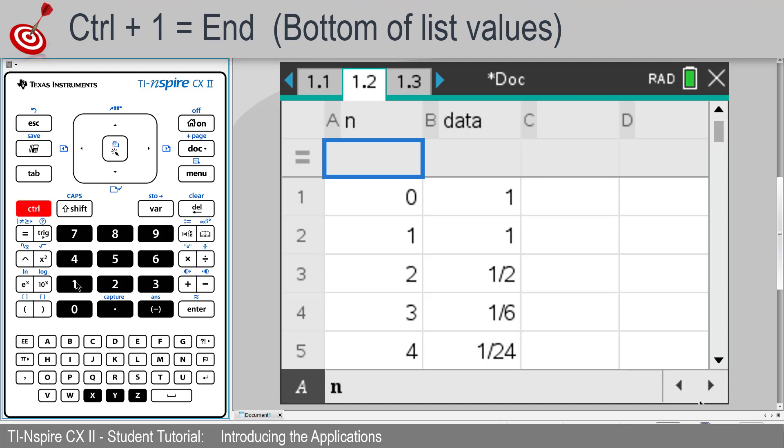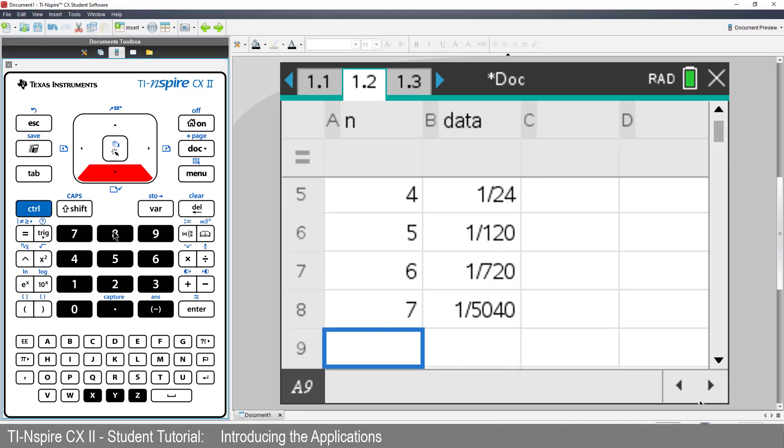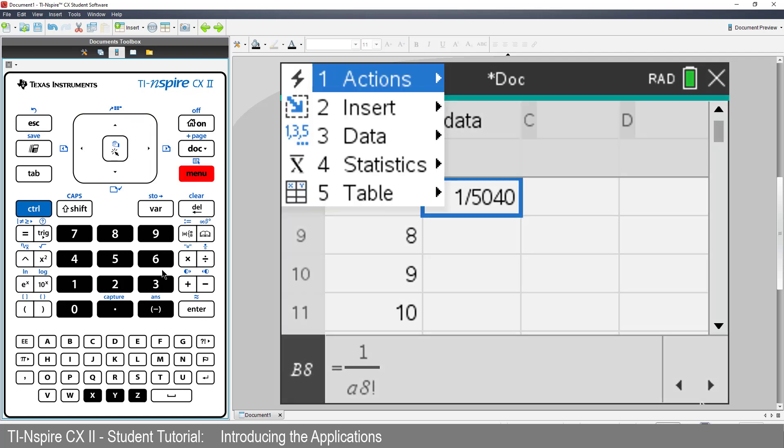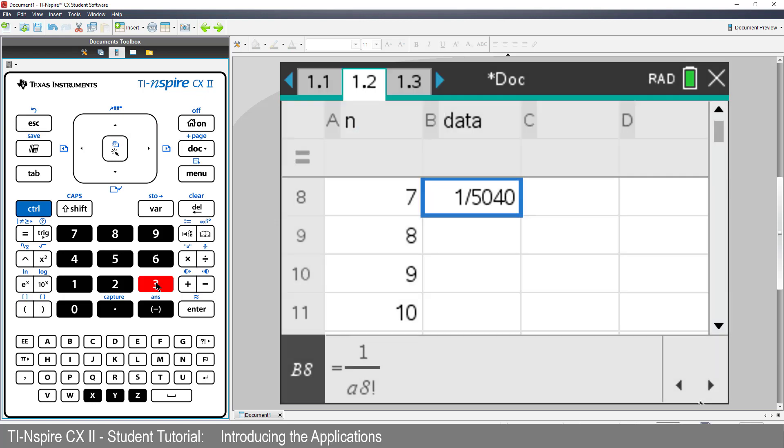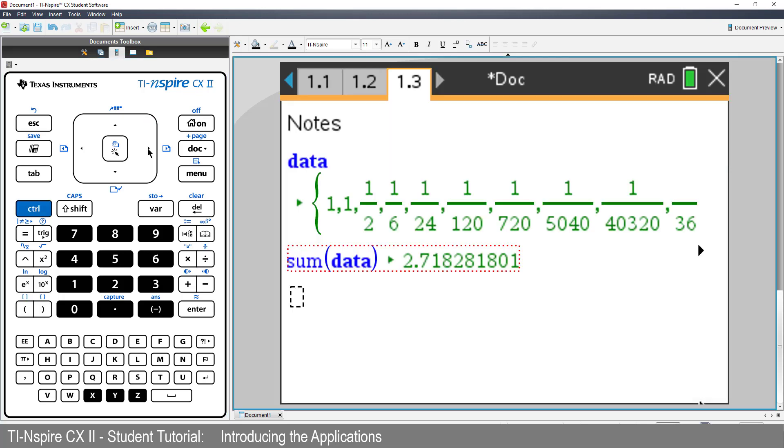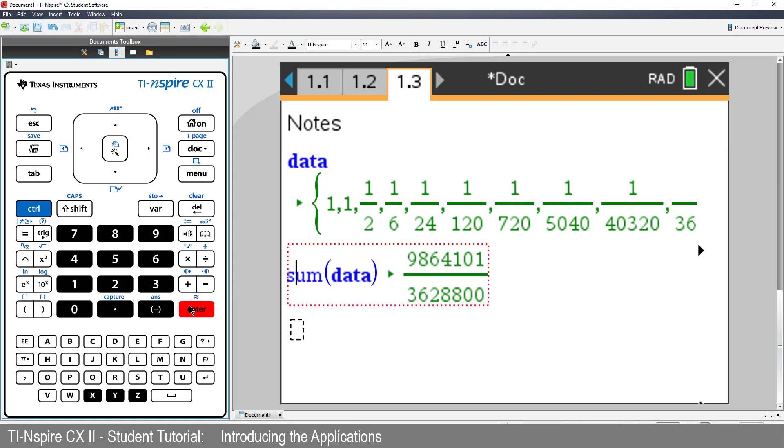Let's navigate back to the spreadsheet by pressing Control and left arrow. We'll add 8, 9 and 10 into the first column. And then fill the formula down in the second column. Now let's go back to the Notes application. Press Control followed by right arrow. Notice that the calculations have been updated. Unlike the calculator application, computations in MathsBoxes are dynamic and will update automatically.